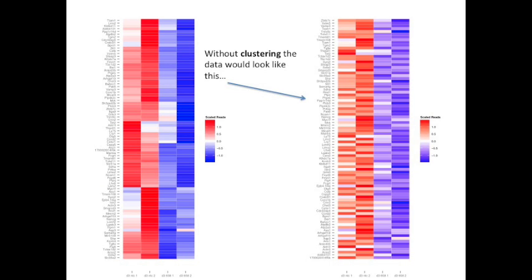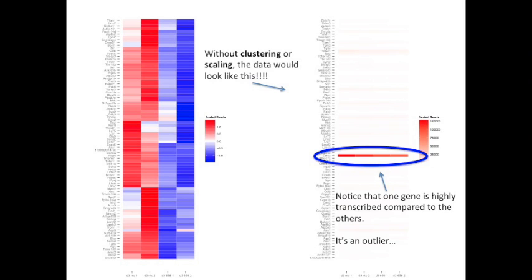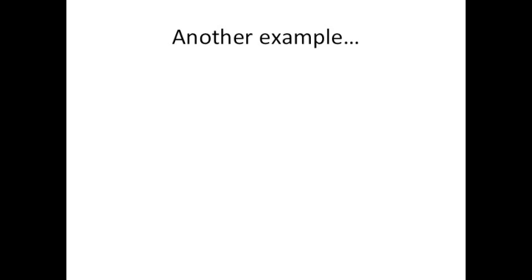Without clustering, the data would look like this, a mish-mash that's harder to interpret. Without clustering or scaling, the data would look like this, which is completely uninterpretable. Notice that one gene is highly transcribed compared to the others. It's an outlier.